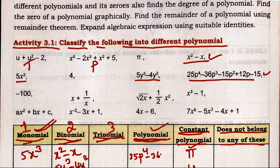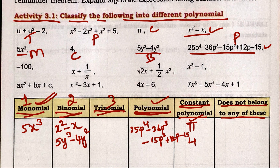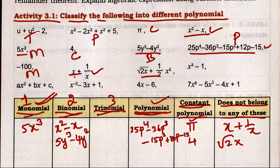25p to the power 4 minus 36p cubed minus 15p squared plus 12p minus 15 is a polynomial. There is also a constant polynomial and a monomial. After simplification, one expression gives x squared — degree 2. Some expressions like x plus 1/x or root 2x plus (1/2)x squared do not belong to any standard polynomial category.